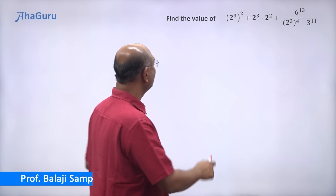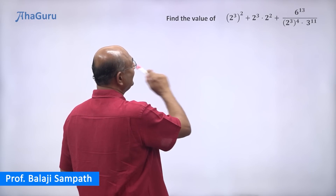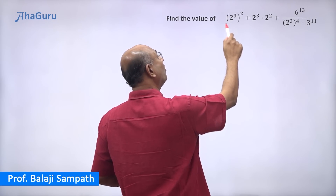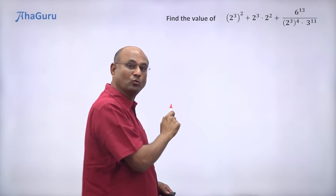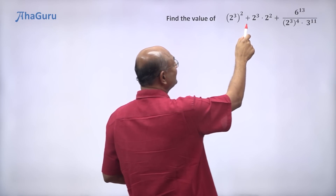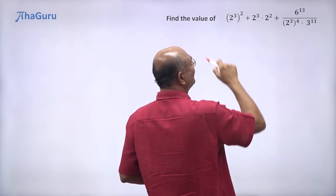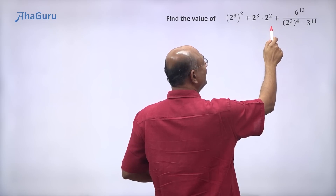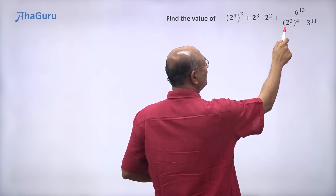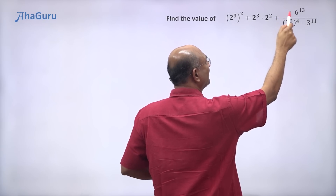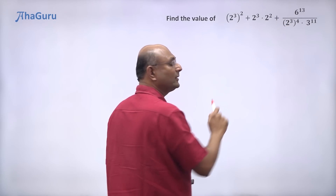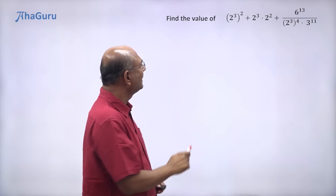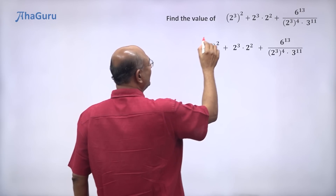Let us now look at this question. We want to find the value of (2 power 3) whole power 2, plus 2 power 3 into 2 power 2, plus 6 to the power of 13, divided by (2 cube) whole power 4 into 3 power 11. That is the question given. Let us take it step by step.